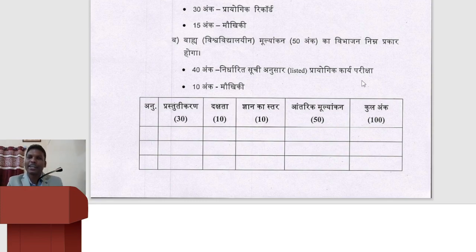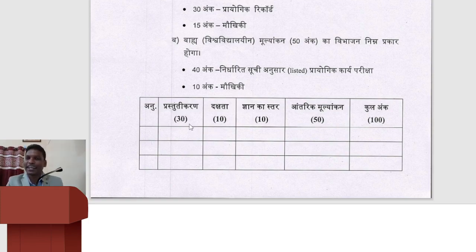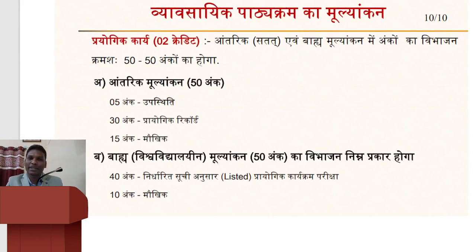Jo practical file bana raha hai, usko badhiya se banaye, kyonki uske 40 ank diye jaenge — jo external examiner aengi, wo degi. Aur usmein se 10 ank jo hain, aapke viva ke liye honge — jo aap interview le sakte hain jab external examiner aengi. Dhyan dijiye — achhe se taiyar kijiye practical file, aur uski prastuti bhi achhe se sikhiye. Prastuti karne ke liye 30 number rahega (internal). Aur aap kitne competent hain us particular topic par — us practical ke liye — competence ke upar aapko 10 marks milenge. Kya aapka knowledge level kya hai, kitna aap gyaan kiya hai, outcomes mein find out kiya hai — yeh sab 10 marks ke liye. Total 50 marks is tarah se — aur total jo practical hoga 100 marks ka rahega.